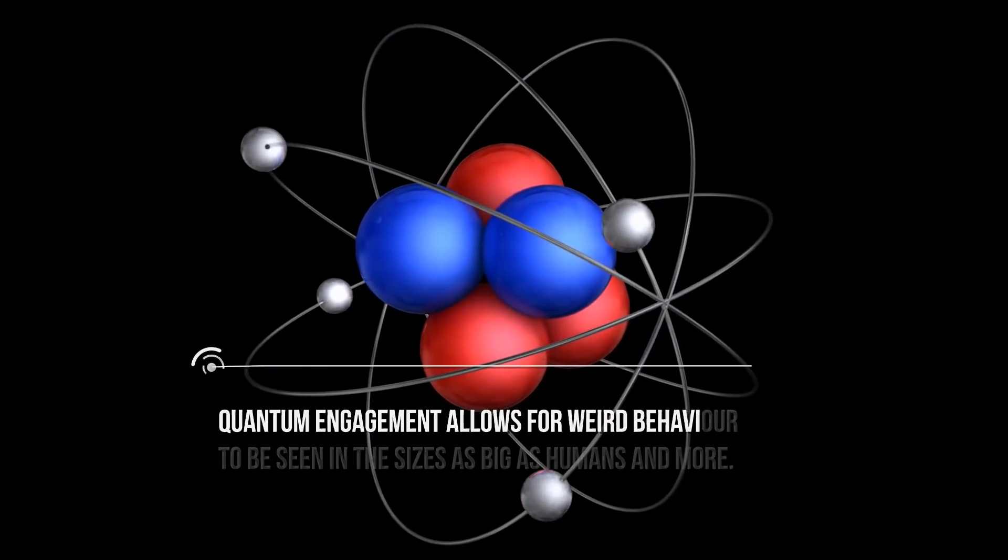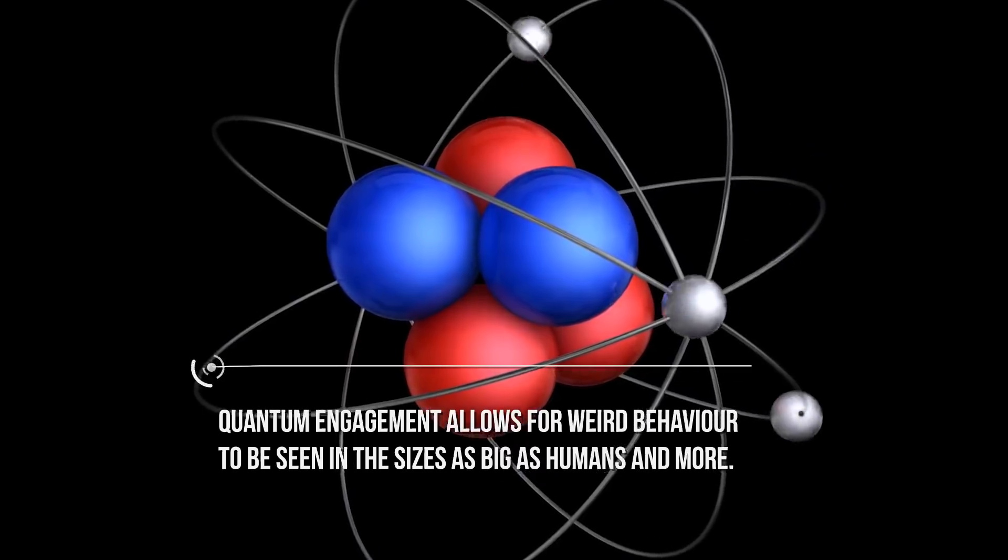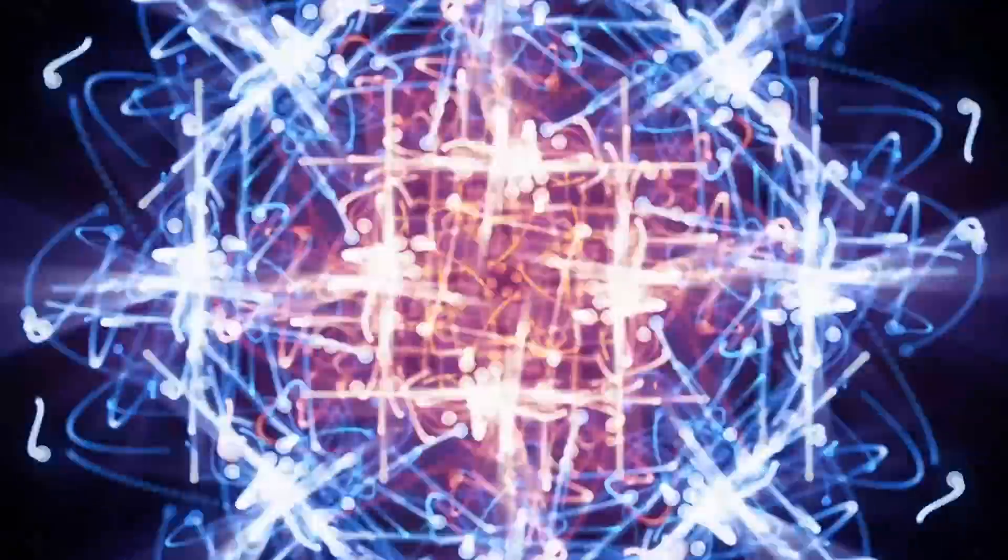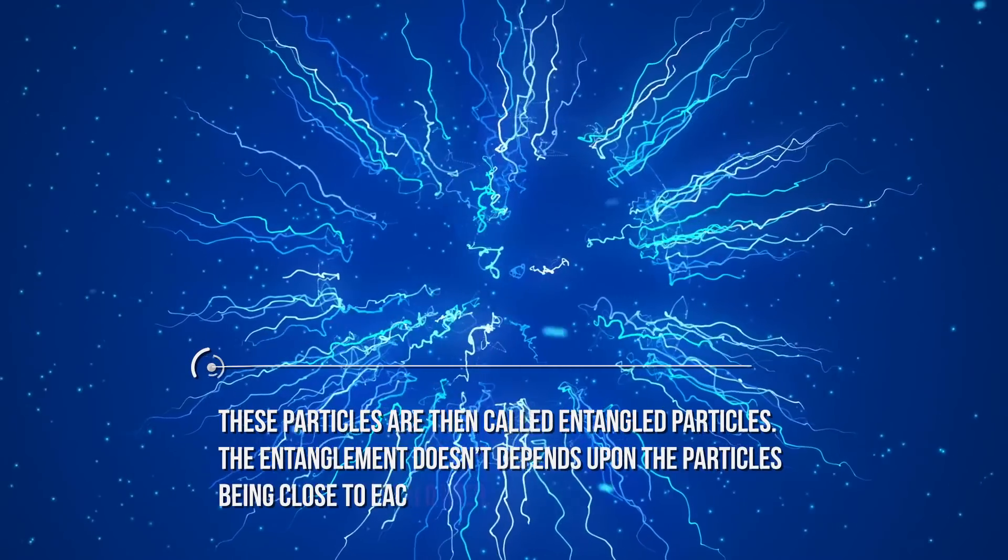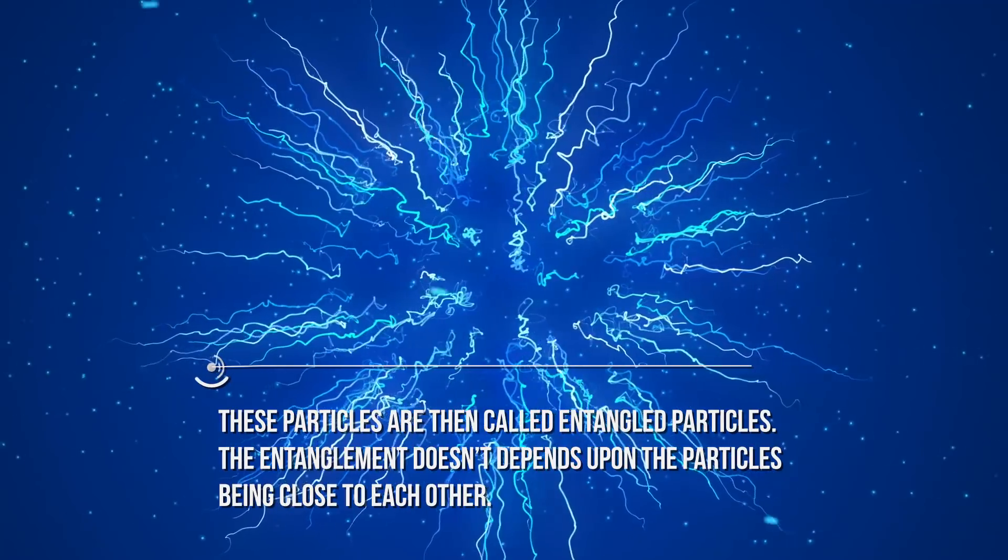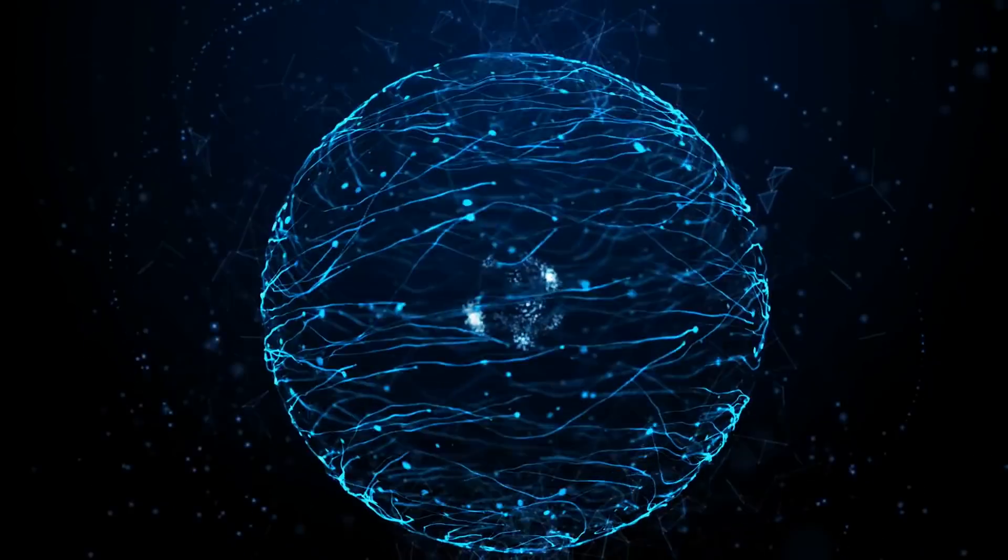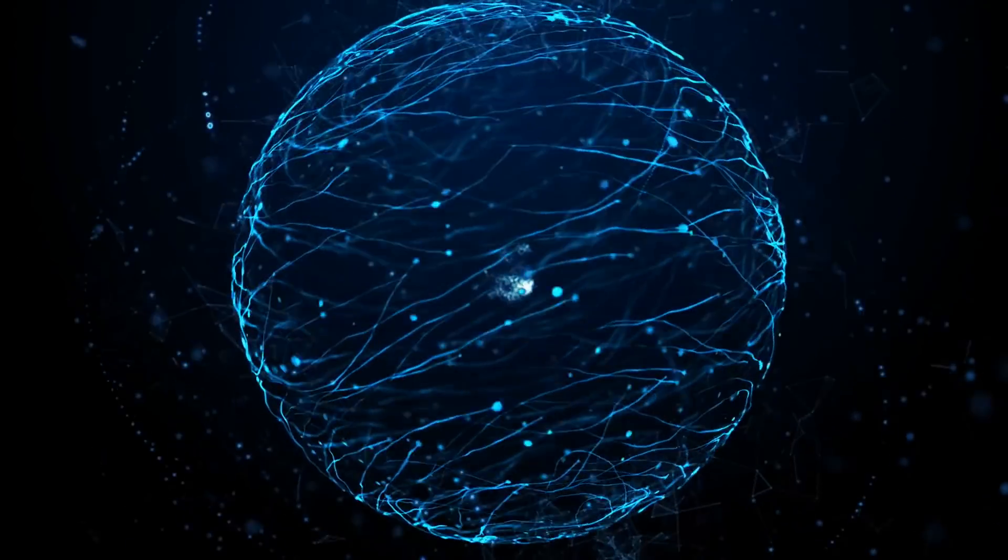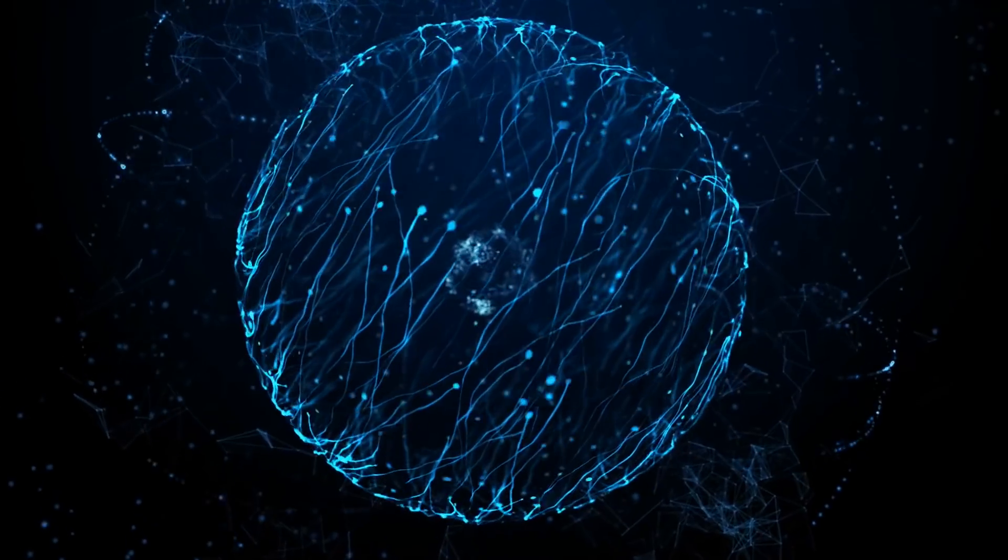Quantum entanglement allows for weird behavior to be seen in sizes as big as humans and more. The important thing here is that both the particles have a single wave function that governs both of the particles. These particles are then called entangled particles. The entanglement doesn't depend upon the particles being close to each other. As long as the two particles don't interact with anything, we can separate them by feet, miles, or even more distances, and the two particles are connected by a single wave function and have opposite spins.